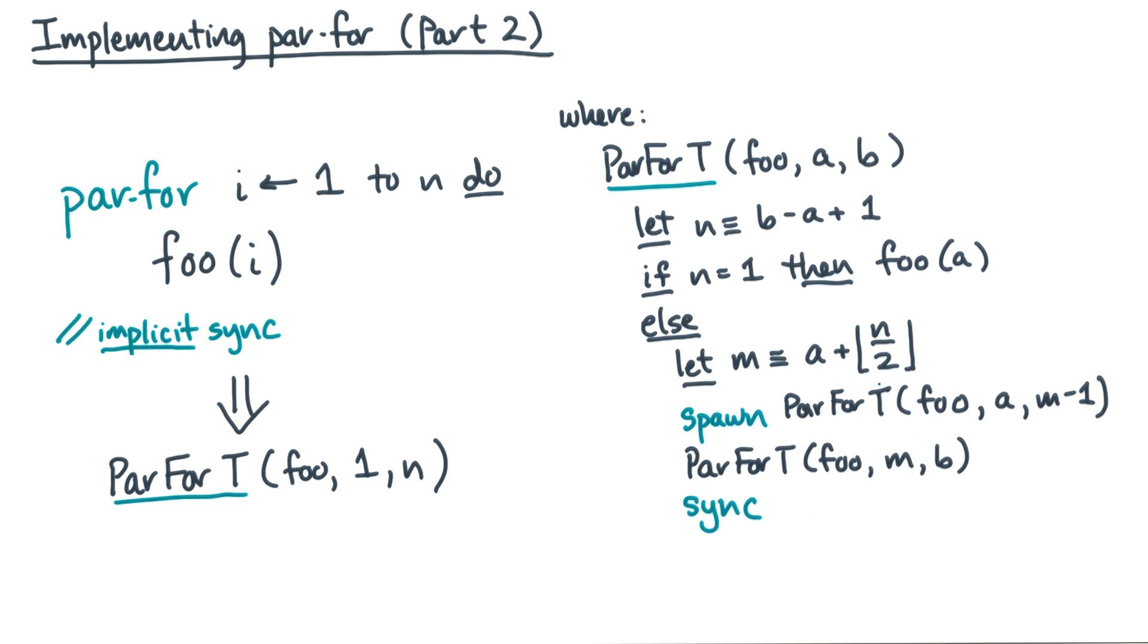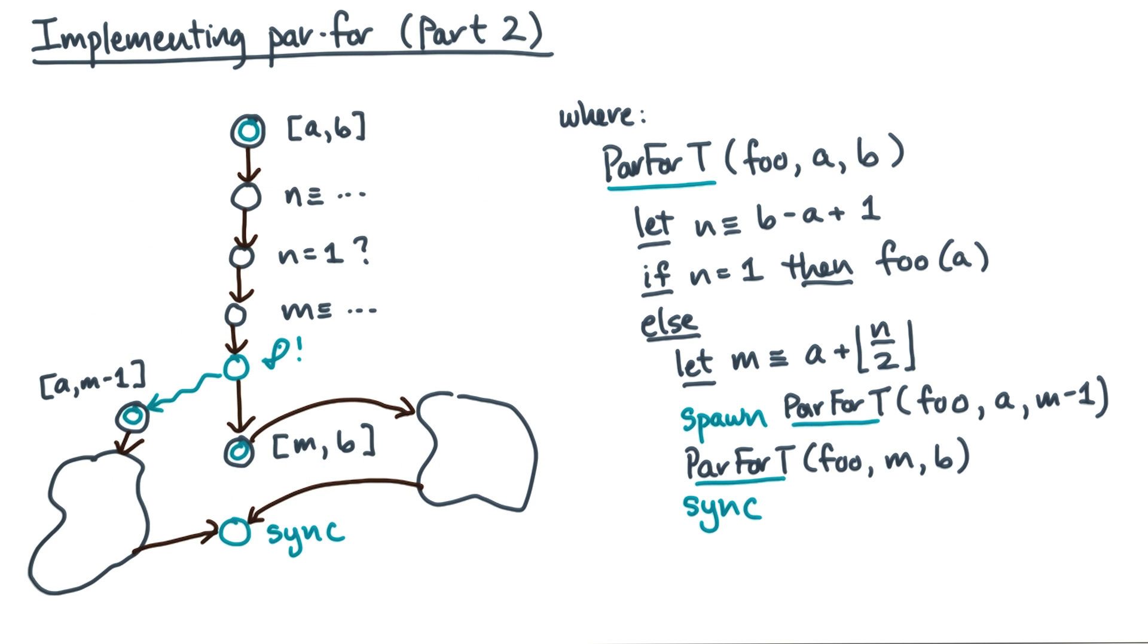The scheme will give you the usual sort of binary tree recursion. So if you ask what's the span of this dag, it should be logarithmic.